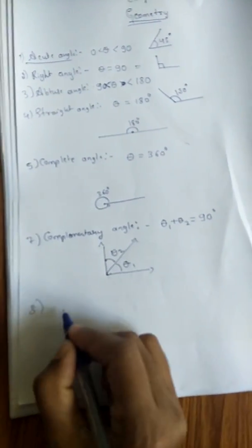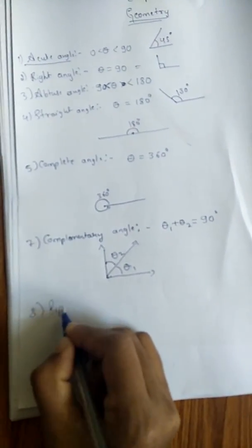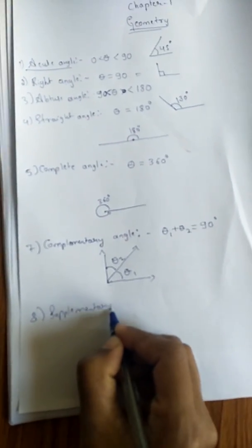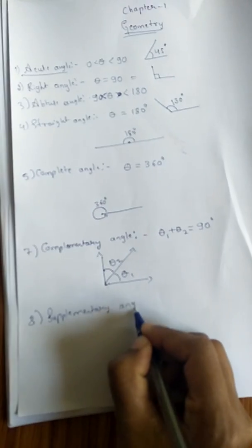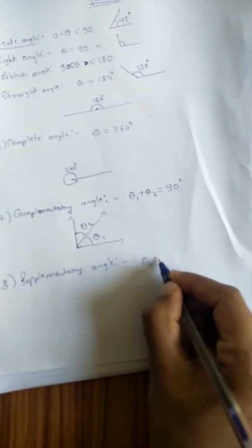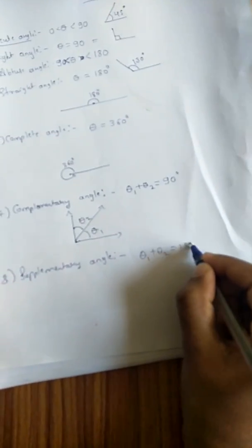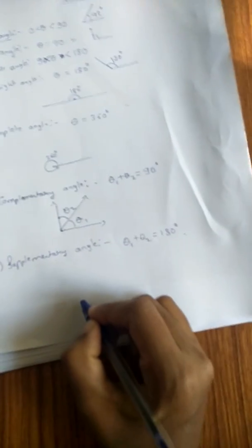Supplementary angle means theta 1 and theta 2 add to 180 degrees. This is supplementary angle.